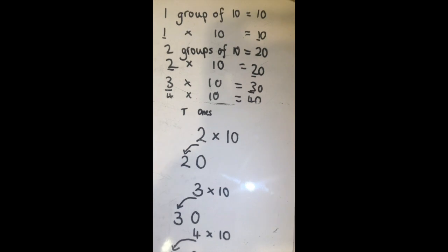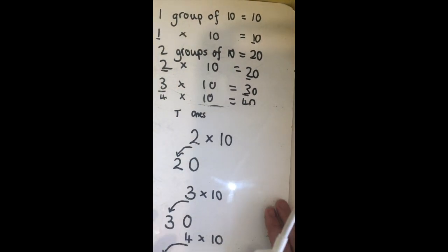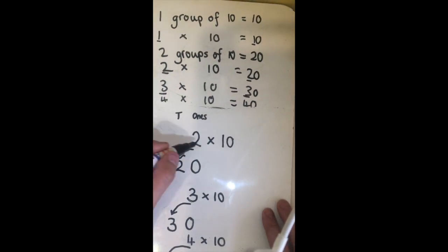Okay, so when you multiply by ten, you move the digits one place to the left and you add zero as a place marker.